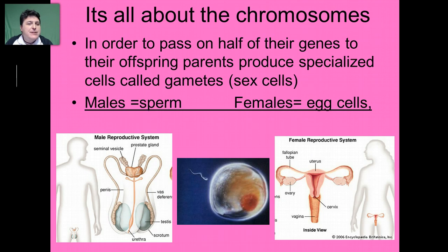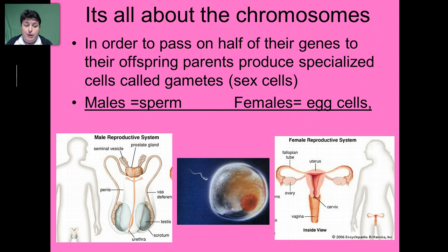In order to give half of their genes to their offspring, parents produce specialized cells called gametes or sex cells. Males produce sperm in their testes, while females produce the gametes called eggs in their ovaries.